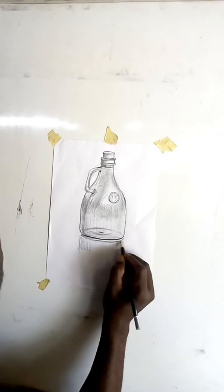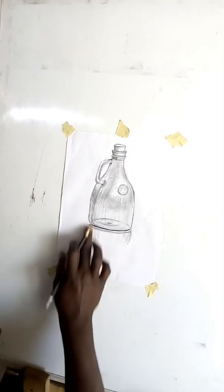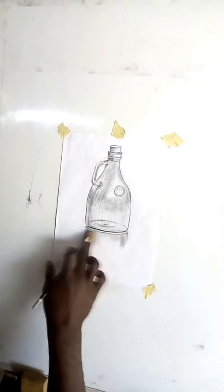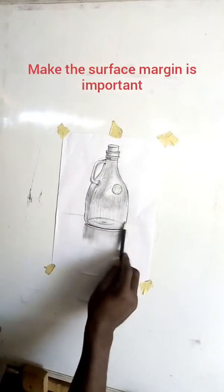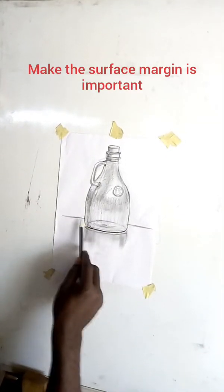These are the shadow reflections. This one is the base. You have to show this line to understand that it's standing on the surface.